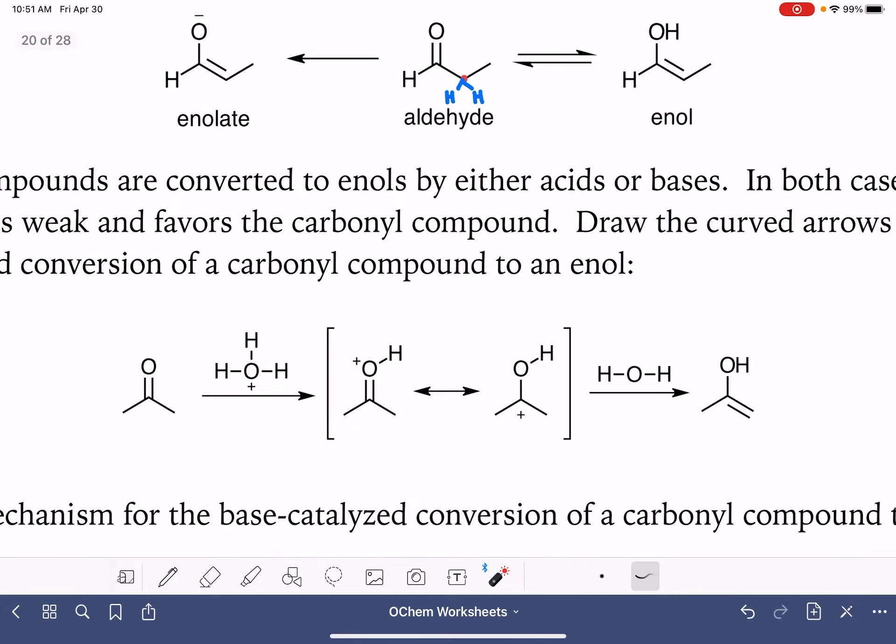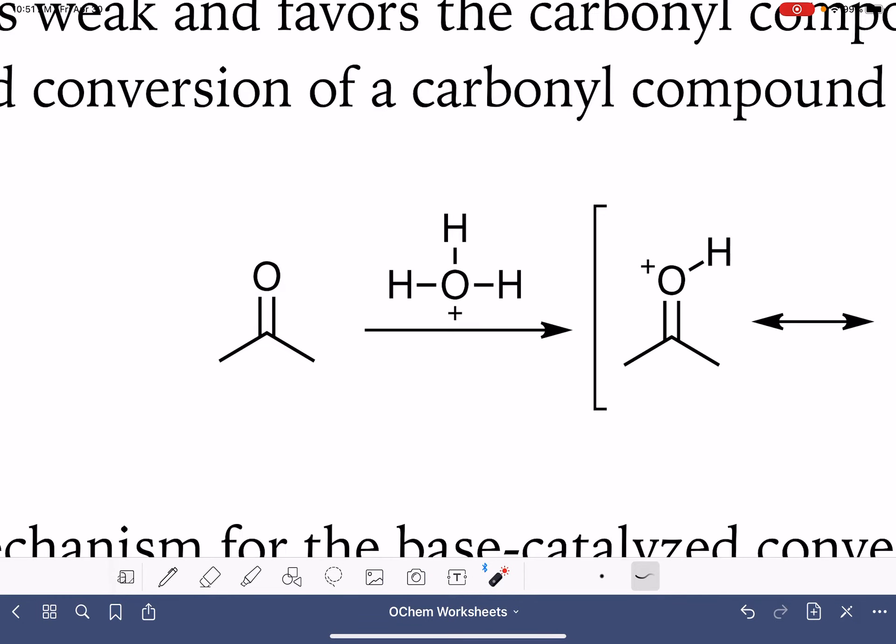Let's go look for another. Here we have a ketone. This particular ketone has two alpha carbons, and it has a total of six alpha hydrogens, three on each one of the carbon atoms.